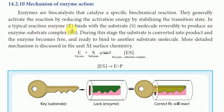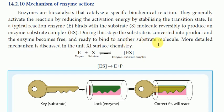In a typical reaction, enzyme E binds with the substrate S — the substrate molecules — reversibly to produce an enzyme-substrate complex, ES. During this stage, the substrate is converted into the product, and the enzyme becomes free and ready to bind with other substrate molecules.